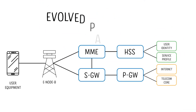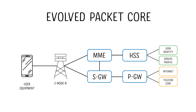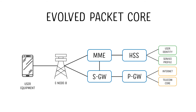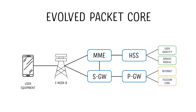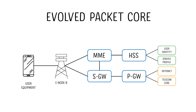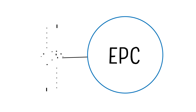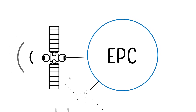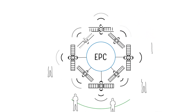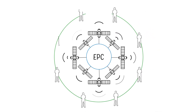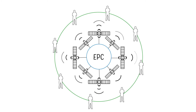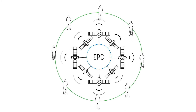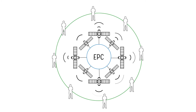The Evolved Packet Core has been highly successful and is the foundation for all modern cellular networks. The same technology shows promise for adoption by VSAT networks to make VSAT just as flexible as cellular and create new service opportunities.